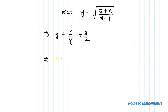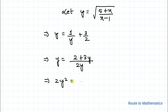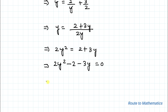This implies, by taking LCM, we have 2y equals to 2 plus 3y. This implies 2y squared equals to 2 plus 3y. Taking all terms to the left hand side, we have 2y squared minus 3y minus 2 equals to 0. So here we have a quadratic equation.